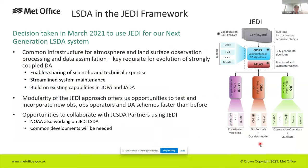Back in 2021 we decided we would also use JEDI for our next-generation land surface DA. That gives us a common infrastructure for both atmosphere and land surface DA — a key prerequisite for building more strongly coupled DA. Alongside that, we can share expertise built around JEDI, streamline system maintenance, build on existing atmospheric capabilities, and exploit JEDI's modularity to more easily incorporate new observations, observation operators, and DA schemes. It also opens new collaboration opportunities with JCSDA partners such as NOAA.